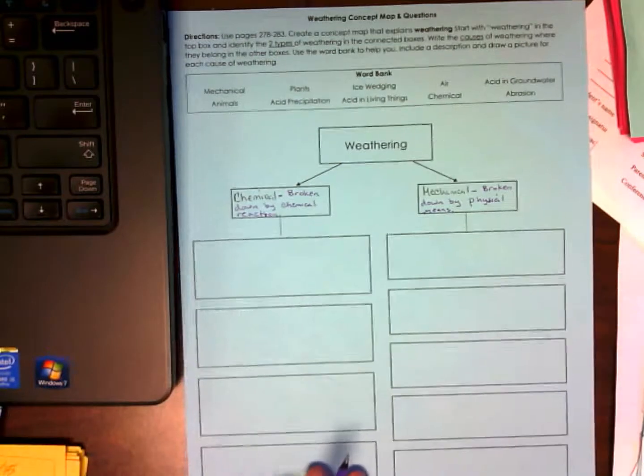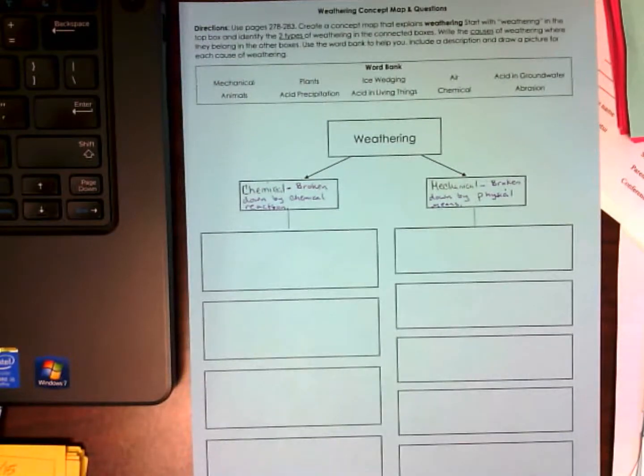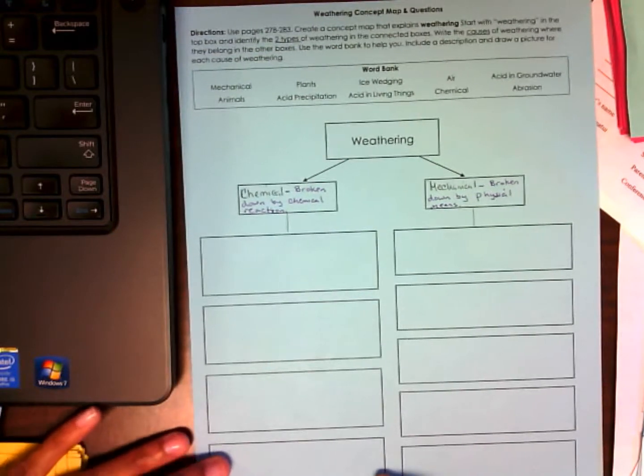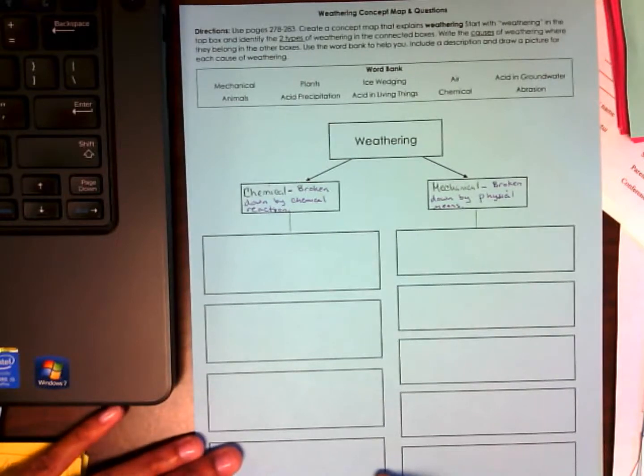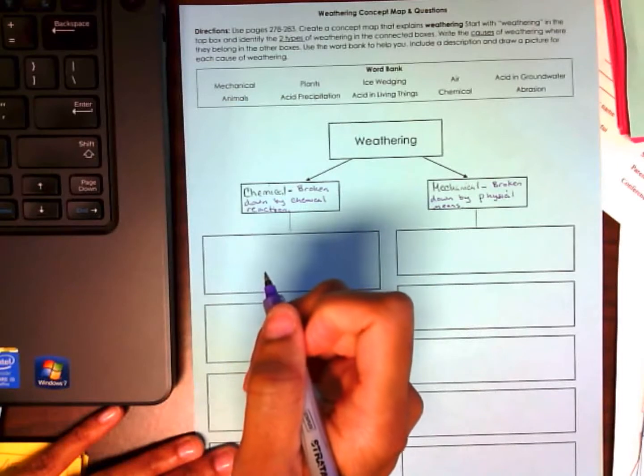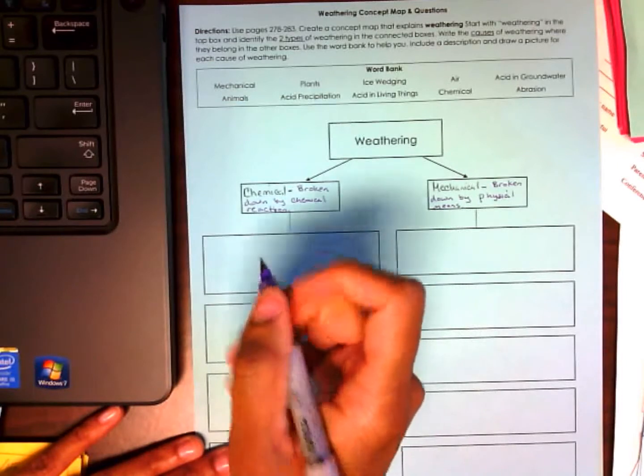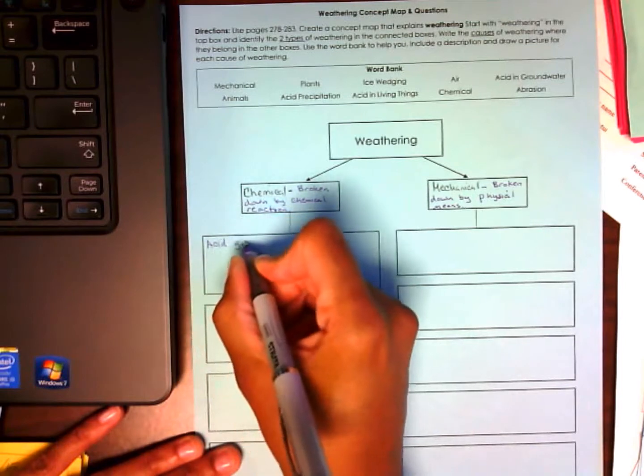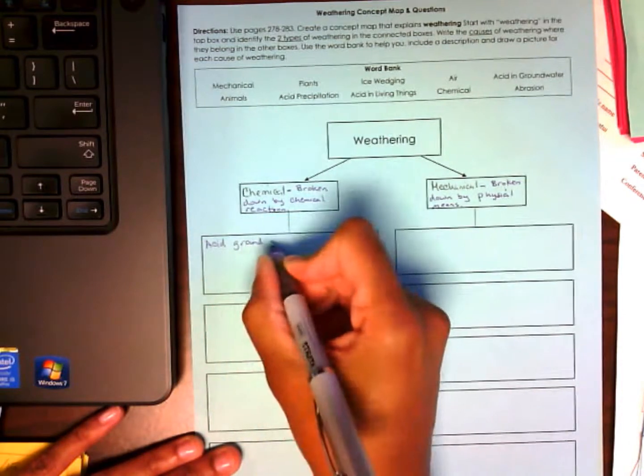Now, you have four boxes under chemical. Five boxes under mechanical. Your word bank includes ten words, which means that one of your words will be used twice. So, what can I put under chemical weathering? Ayana. Acid groundwater. I'm sorry, you said what baby? Acid groundwater. Acid groundwater. Very good. Bless you.